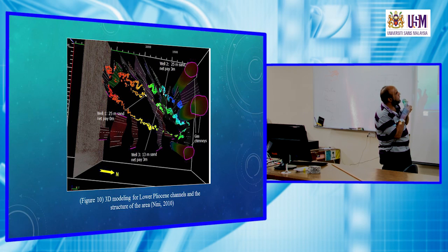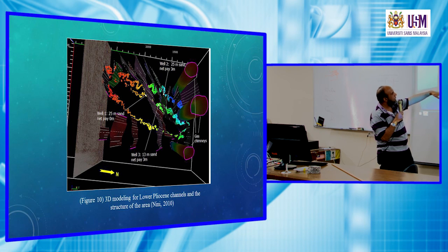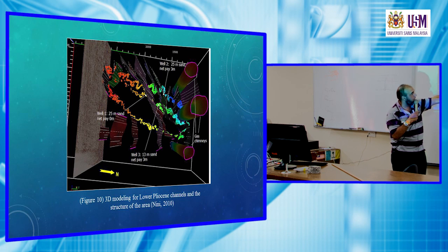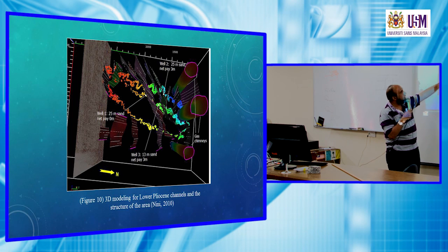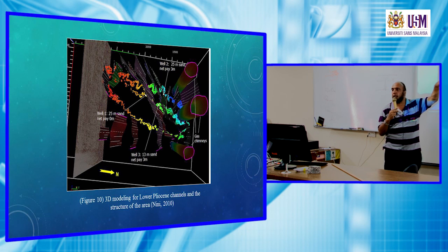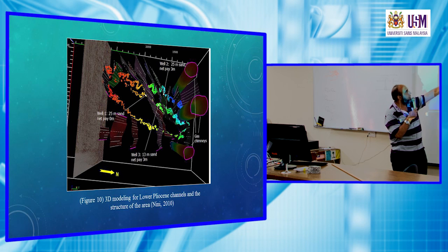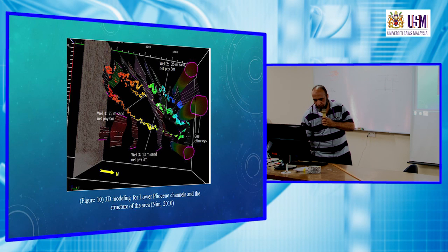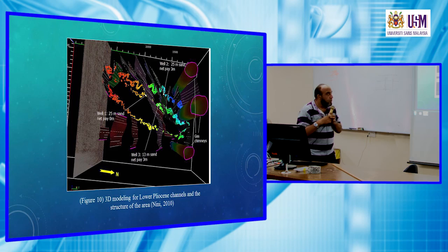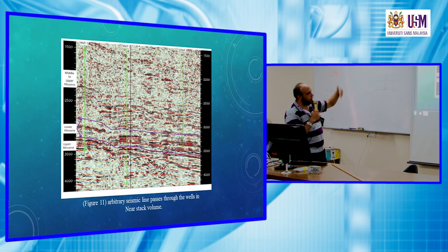So we have here, as you see, three chimneys. And now we have the wells. Well number two, the reservoir is 25 meter sand and the net pay is 3 million. Well number three, the sand is 13 meter, and the net pay is 3 million. Whereas well number one in the same age, in the same sand, also 25 meter sand, but the net pay is 0 meter.